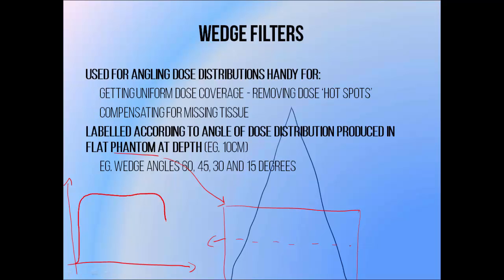Sometimes it's to our advantage to use a wedge filter to reduce the intensity of a beam across its axis. Putting a wedge-shaped filter in the beam means that different parts of the beam have to pass through different thicknesses of material before reaching the patient, and are attenuated to different degrees.